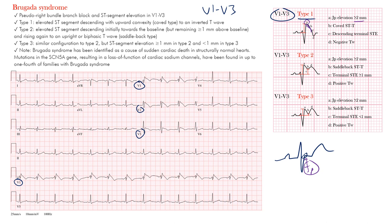In Type 1, the J point is elevated — in this case it should be greater than 2 millimeters. We have that coved-type ST segment morphology, and then a descending terminal ST segment elevation. That means it's coming down past the baseline into an inverted — negative — T wave. The red marker shows 2 millimeters from top to bottom. Type 1 is the most unique; Types 2 and 3 tend to be similar in morphology.